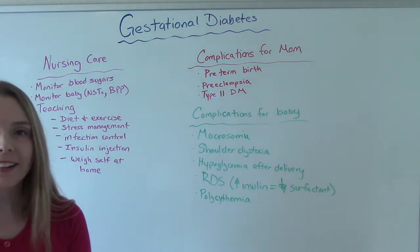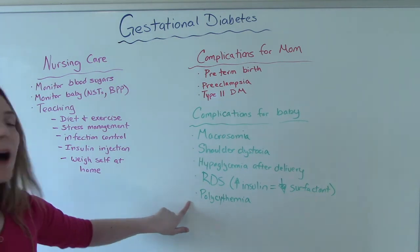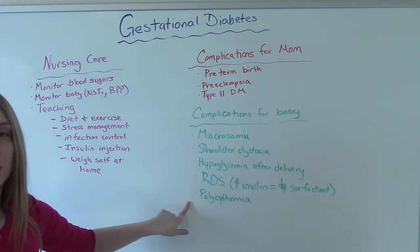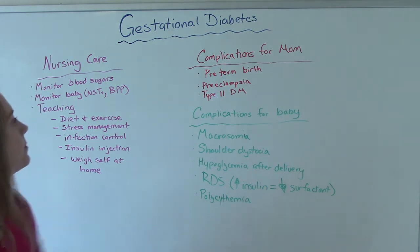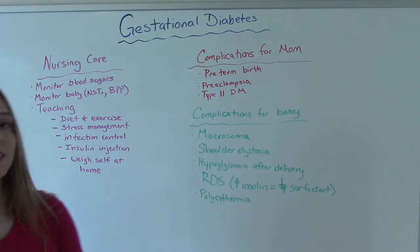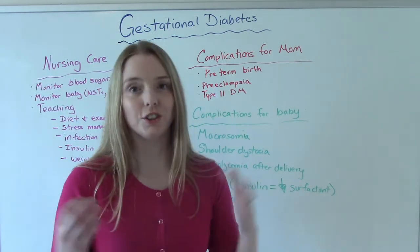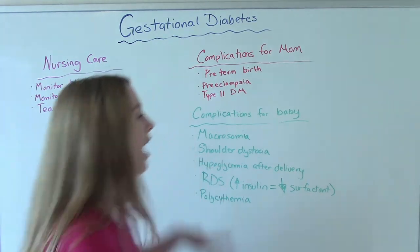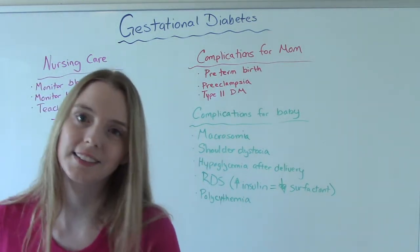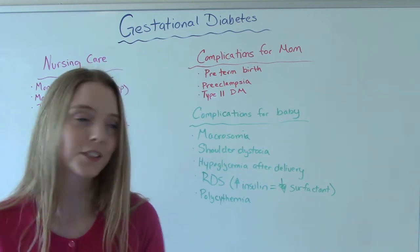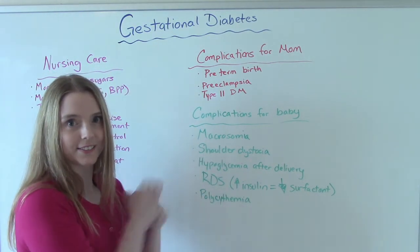And then finally, another possible complication would be polycythemia, which is an increase in the number of red blood cells in the baby — not good in an infant, especially because of jaundice. A lot of these things for baby can lead to other things we don't want, so there are complications from the complications.